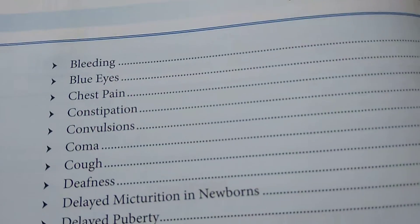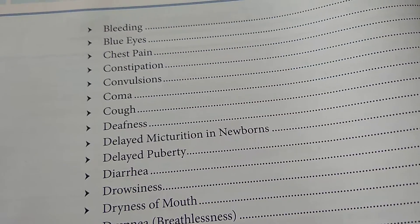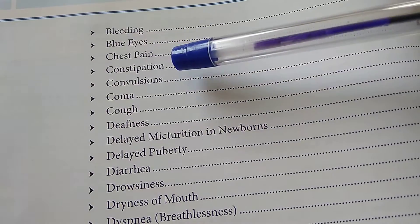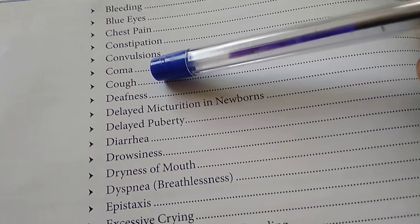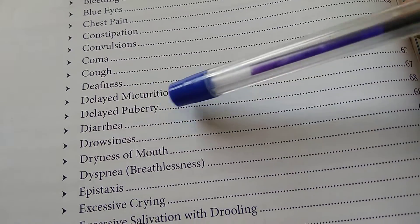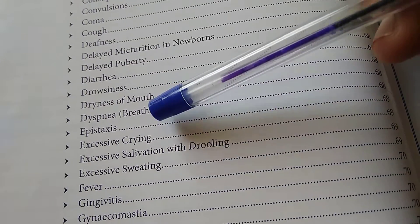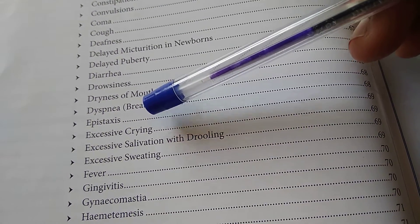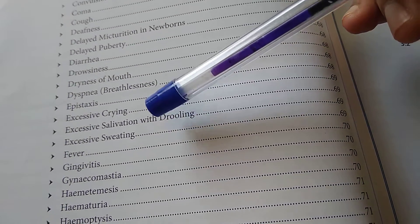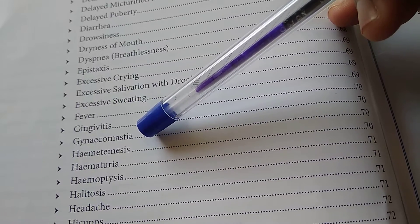Then bleeding, blue eyes — what is this blue eyes? It reminds me of book thalmos. Chest pain, constipation, convulsions, coma, cough, deafness, delayed micturition in newborns, delayed puberty, diarrhea, drowsiness, dryness of mouth, dyspnea, epistaxis — that is bleeding from the nose — excessive crying, salivation, withdrawing, sweating, excessive fever, gingivitis, gynecomastia.